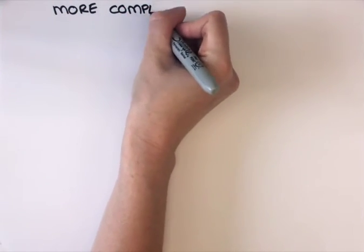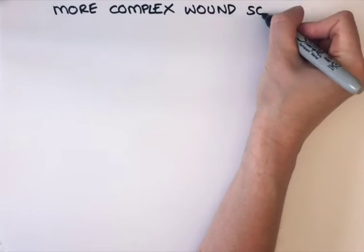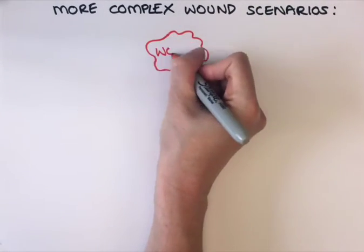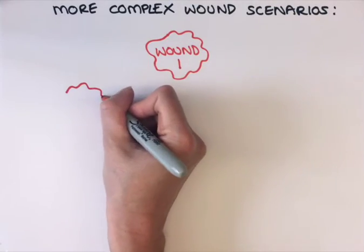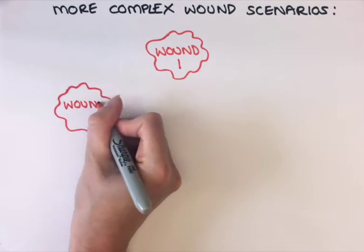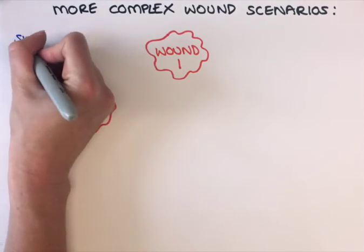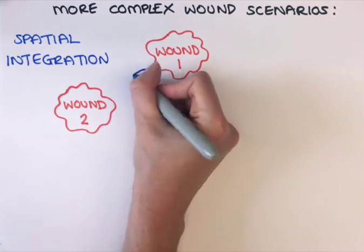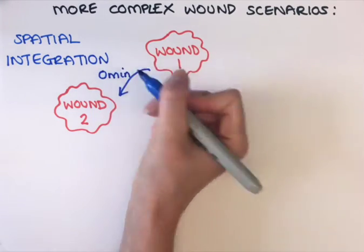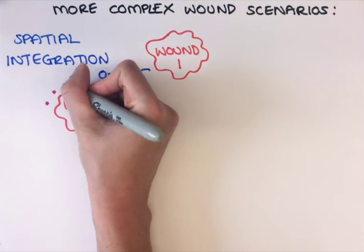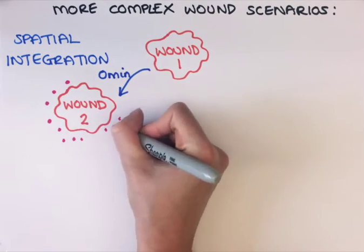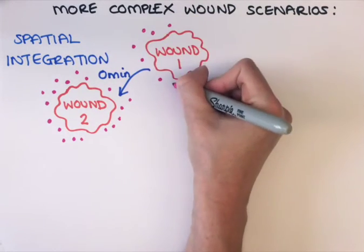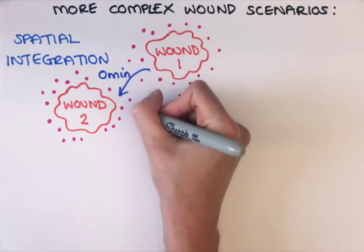We went on to model more complex wound scenarios, such as the immune response to two competing wounds. We first wanted to validate the information about the attractant parameters from our single wound study, so we took a predictive approach and used the single wound parameters to predict what would happen when two wounds were made at the same time. We simulated how the attractant gradients from two competing wounds made at different distances apart would overlap in space and time.